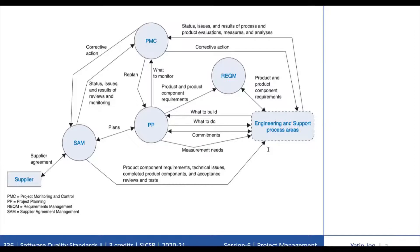The requirements management process area is fundamental to a controlled and disciplined engineering process. The Supplier Agreement Management process area, SAM, addresses the need of the project to acquire those portions of work produced by suppliers, outsiders, or third parties. Sources of products that can satisfy project requirements are proactively identified, the supplier is selected, and a supplier agreement is established to manage the supplier. The supplier's progress and performance are tracked as specified in the supplier agreement, which is revised on a timely basis. Acceptance reviews and tests are conducted on the supplier-produced product components.